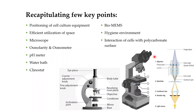Before moving on to the questions, let's recapitulate key points from this week's NPTEL video lectures. Professor Das discussed the positioning of cell culture equipment. The cell culture facility is separated from the main lab using glass walls or partitions. Before entering the core facility, you pass through a first room where you sanitize yourself — washing hands, wearing gloves, mask, head cap, and apron.